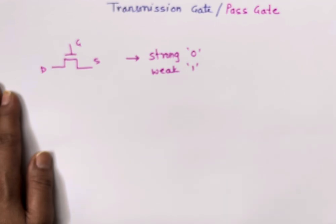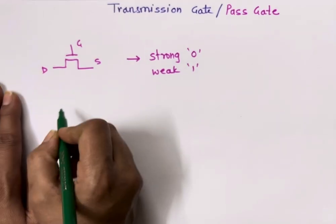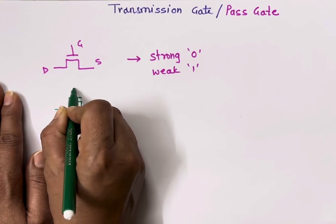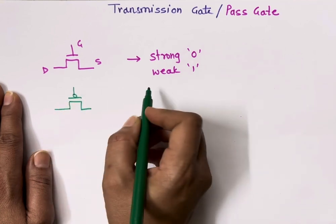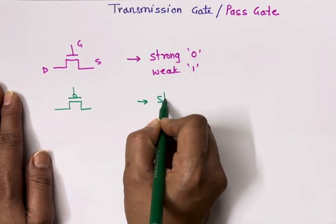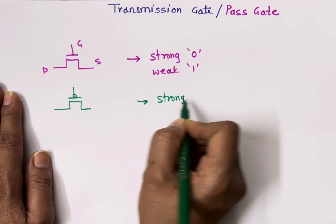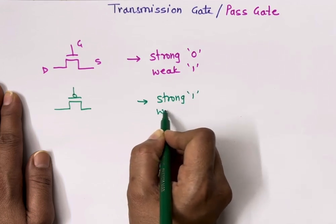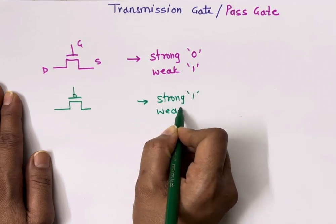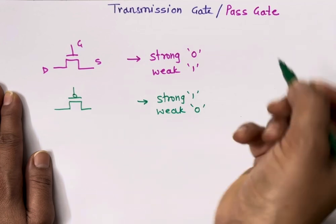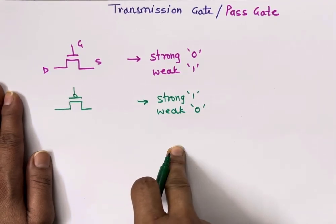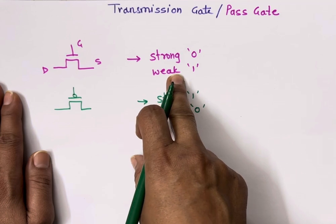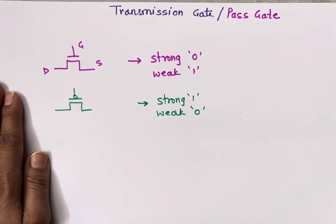In the case of P-channel MOSFET, it gives us a strong value of one and a degraded or weak value of zero. So PMOS gives us strong one, and NMOS gives us a strong value of zero.